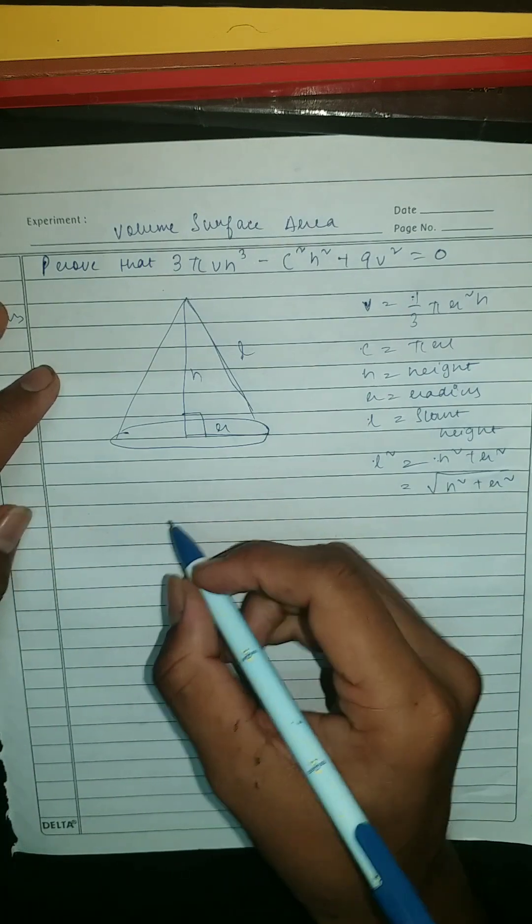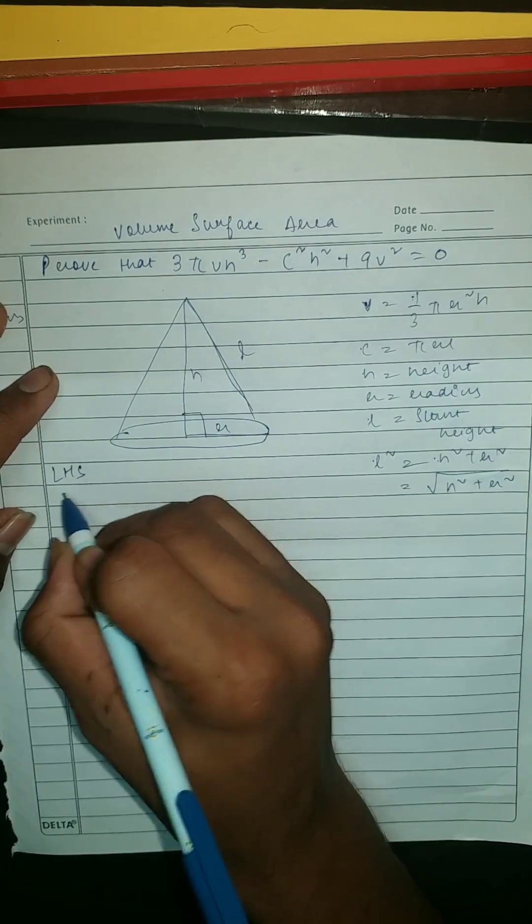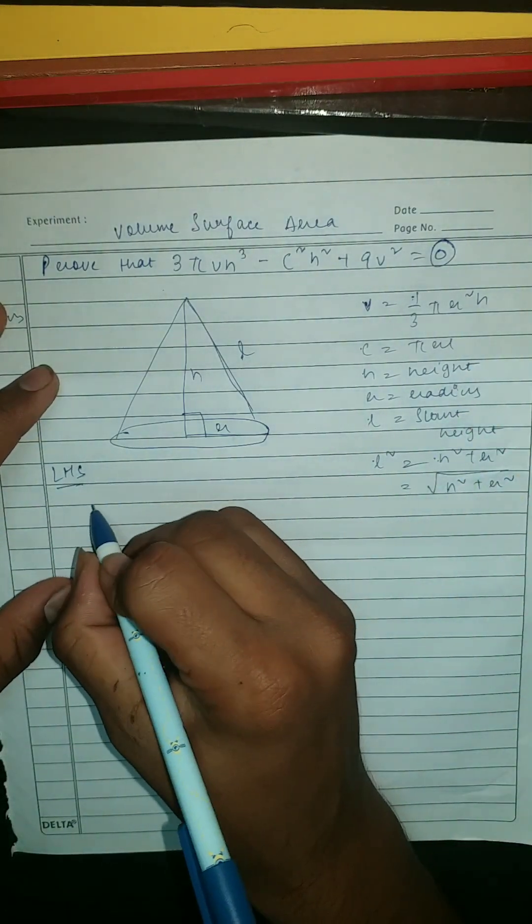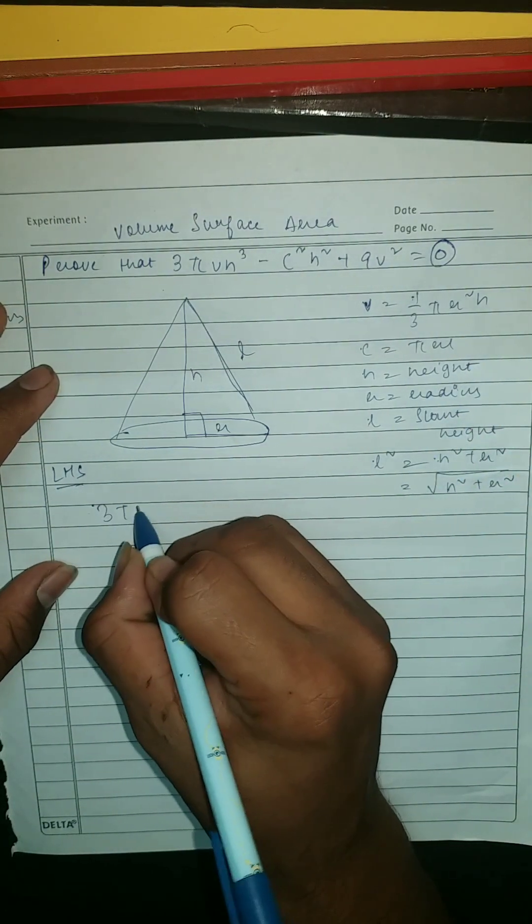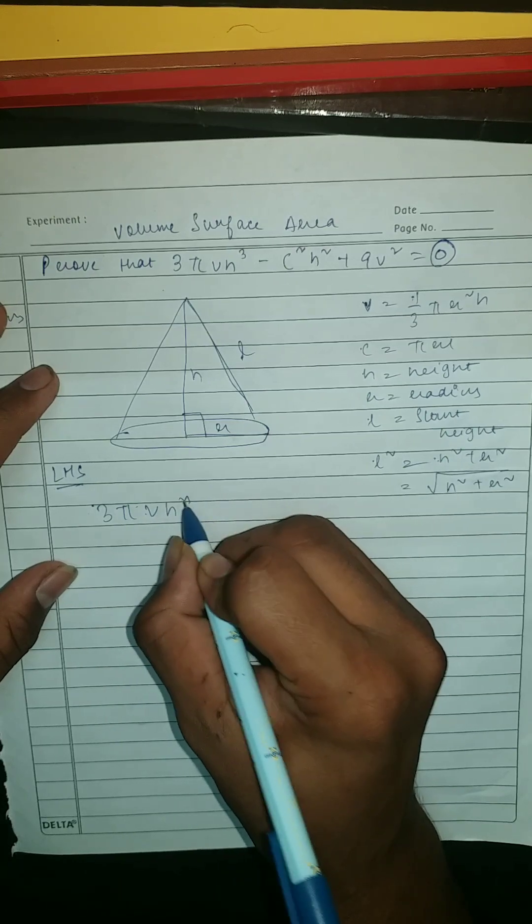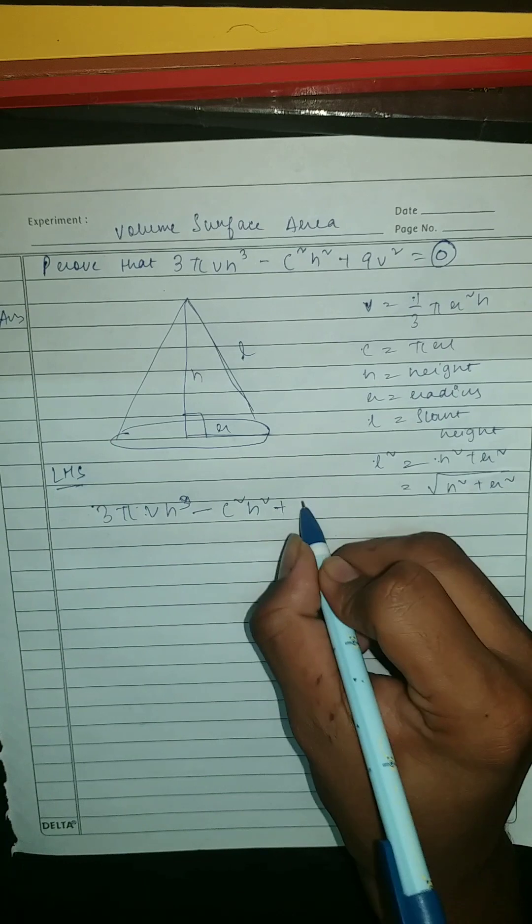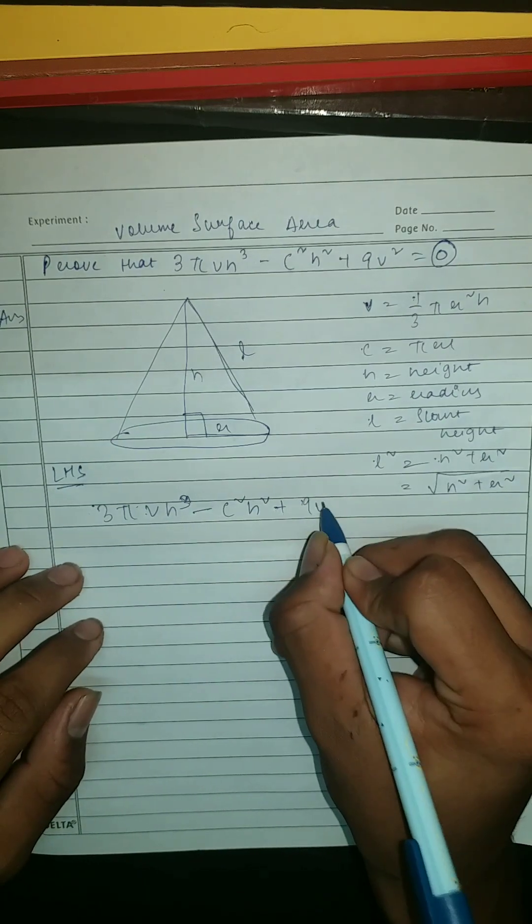Now what we're gonna do, we're gonna solve this LHS. We have to prove this RHS which is equal to zero. So here this should be 3πVh³ minus C²(h² + r²) plus 9V².